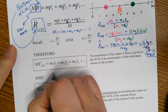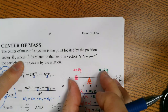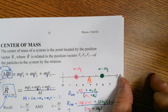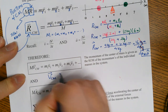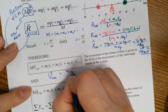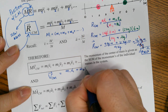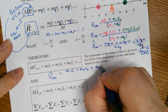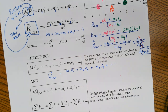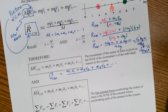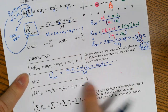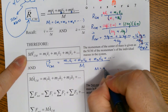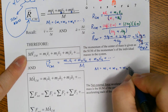The velocity of center of mass — this whole system could be traveling in some direction, and we can calculate the velocity of this center of mass. V_CM is defined as M1 times V1 plus M2 times V2 plus M3 times V3, etc., all divided by the total mass M, which represents M1 plus M2 plus M3, etc.